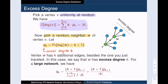Now the probability, q_k, that vertex w has excess degree k is the fraction of edges that lead to a vertex of degree k plus 1 divided by the average degree.